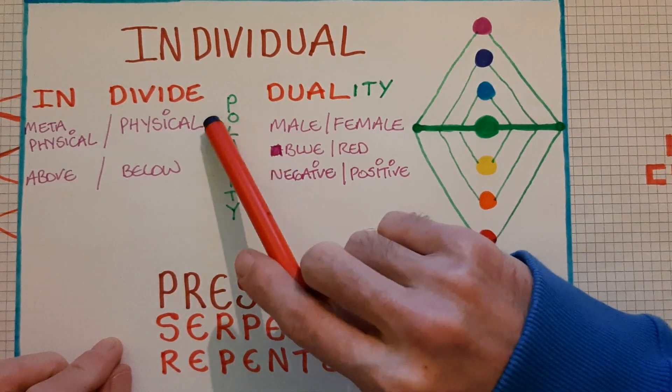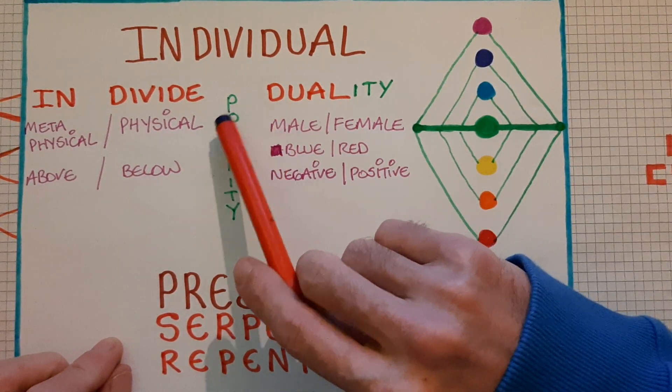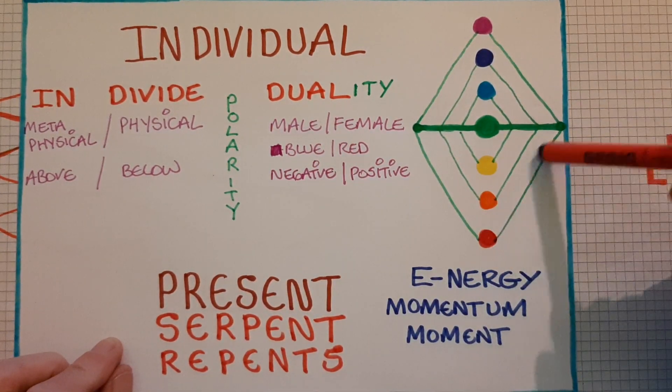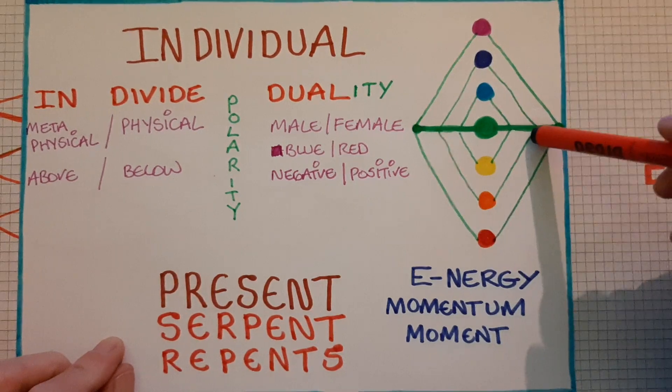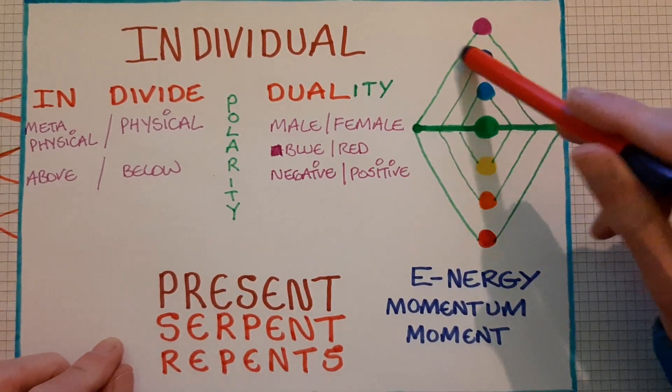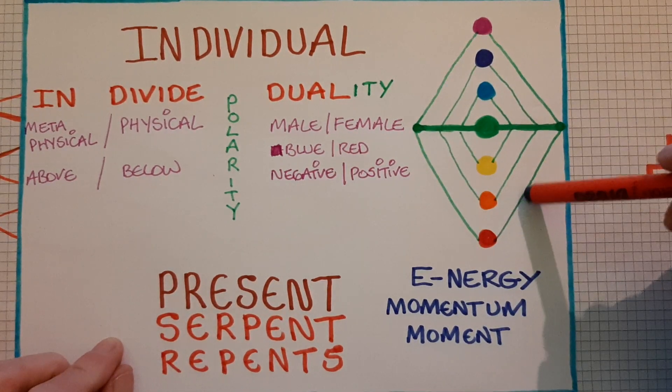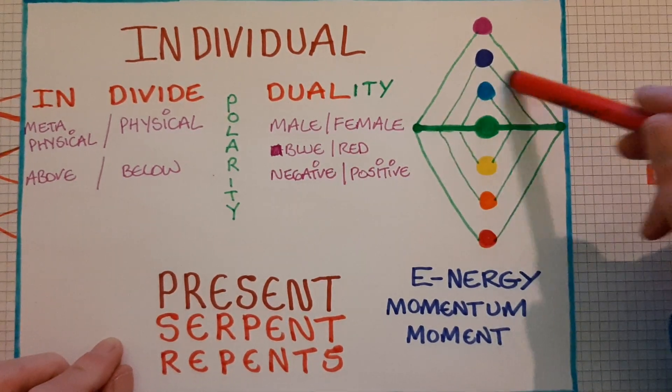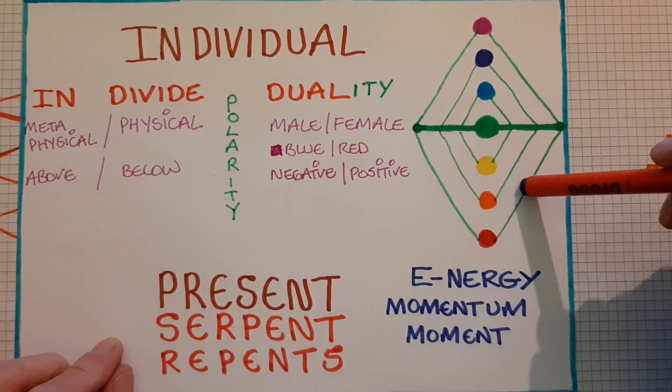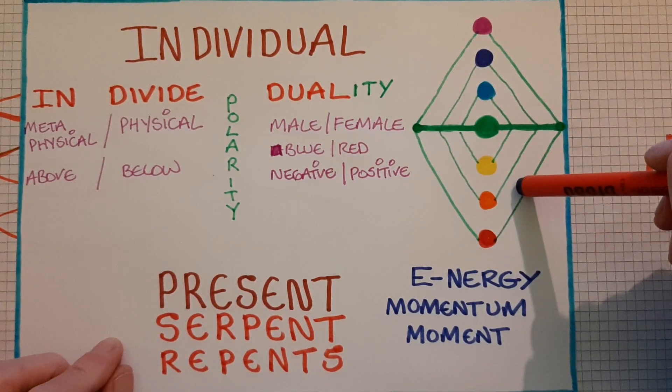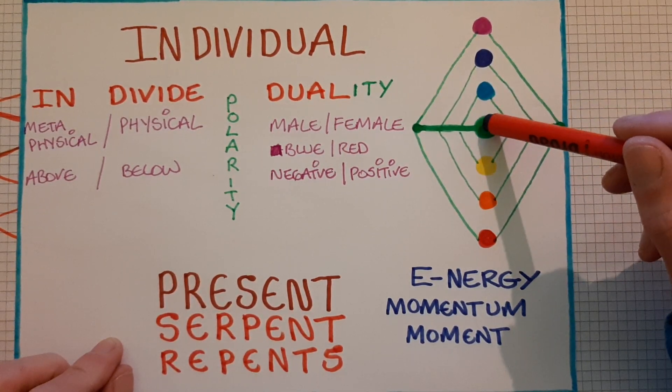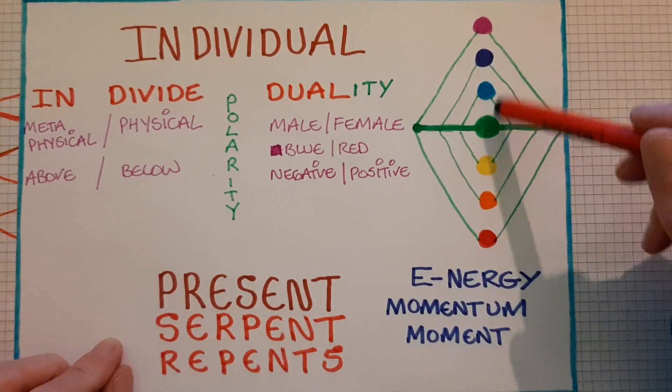We can move into the in part of the divide and the duality. We know we're in divide - mother father, male female, as above so below. Like with the chakra system, I just draw these lines for fun really, but that's how I see the above and this is how I see the below. This is the physical realm, this is the metaphysical realm. This is our higher self and this is us now.